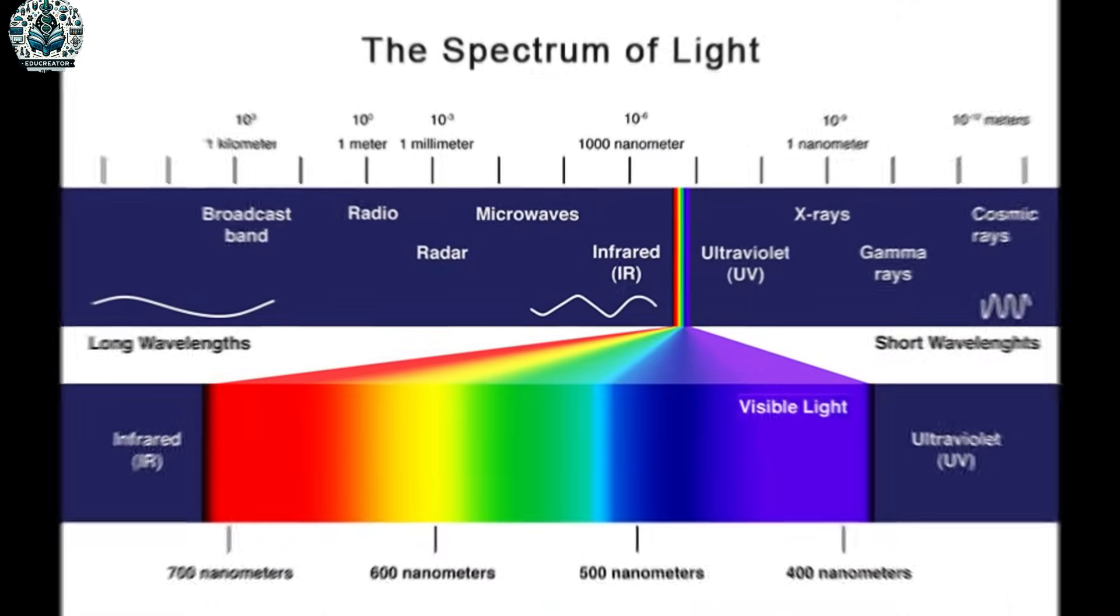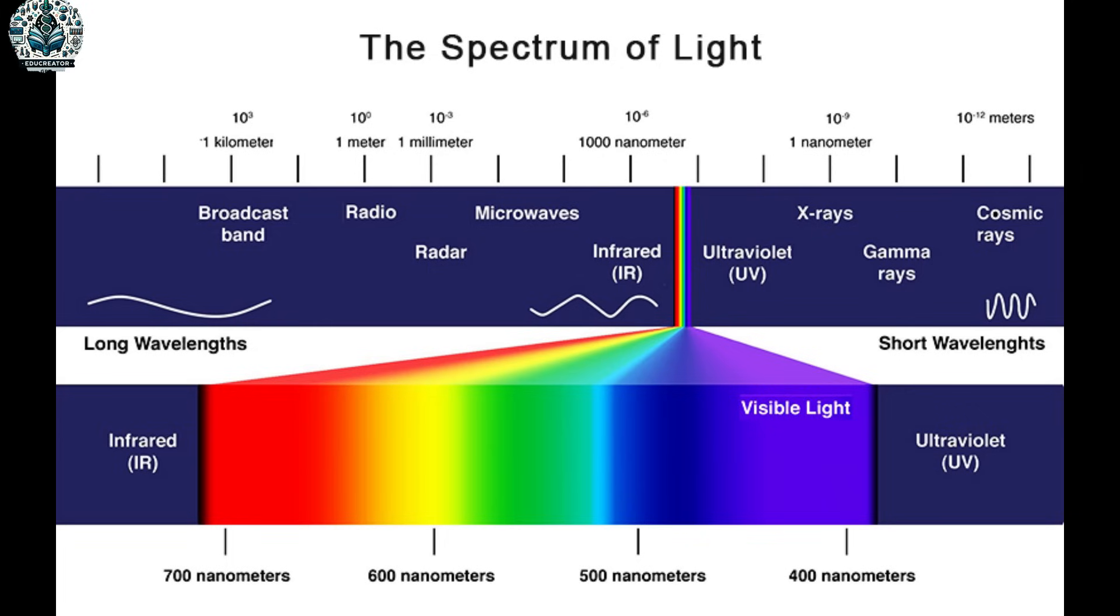These instruments can tell us what stuff is made of, how hot it is, and even how it is moving. So what even is visible, infrared, and ultraviolet? Are these different from light? Well, light is way more than just what we see. Actually, what we see - the colors of flowers, the sky, everything around us - is just a tiny part of what's called the electromagnetic spectrum. Think of visible light as a small section of a huge radio dial. It runs from violet at around 380 nanometers to red at about 700 nanometers.